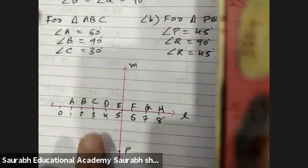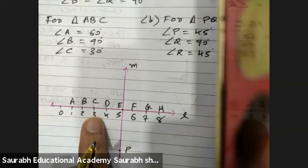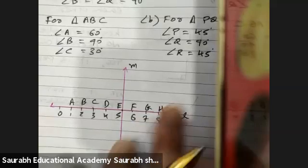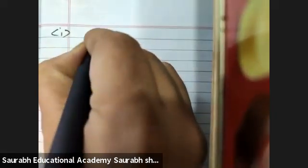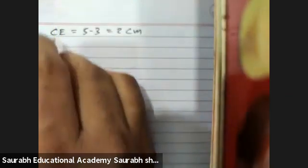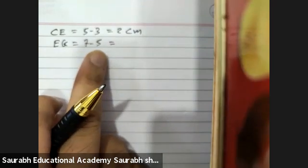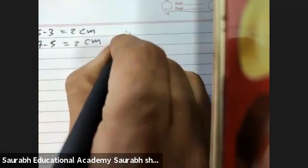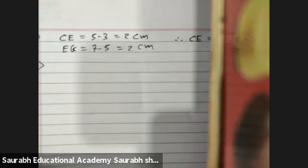Now CE will be two centimeters, five minus three, and EG is also seven minus five, two centimeters. So both will be same. Let me answer the question. First one: CE is equals to five minus three, two centimeters or two units, and EG is equals to seven minus five, E represents five and G represents seven, seven minus five, two centimeters. Therefore first question: CE is equals to EG.